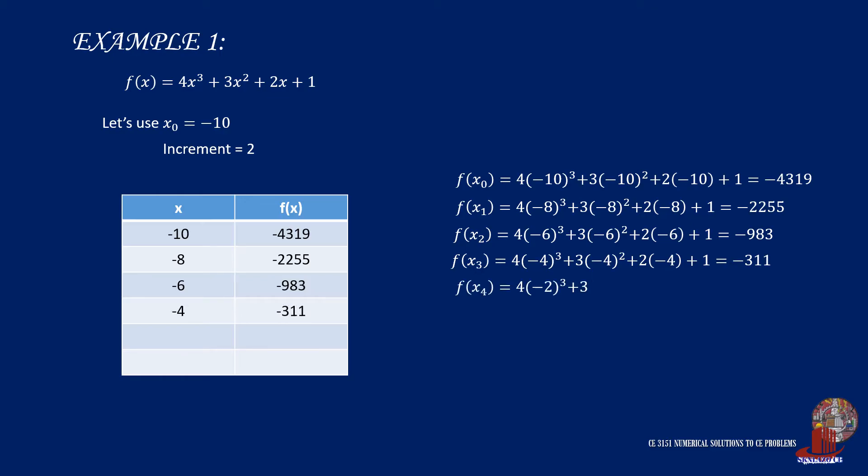Using -2 as the value of x gives us -47, which is nearer to zero or the change of sign or positive value. Placing x as 0 gives the value of positive 1. Hence, we can focus our increment search between -2 and 0.